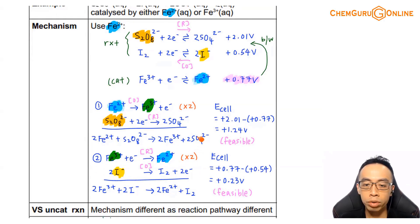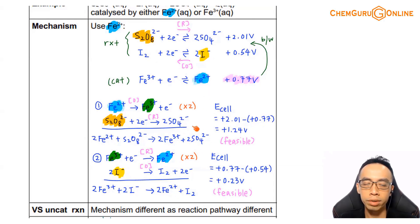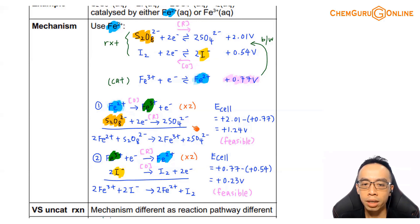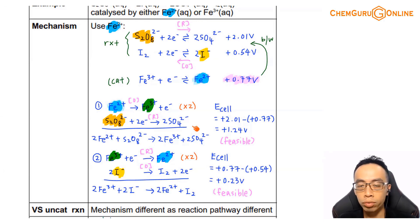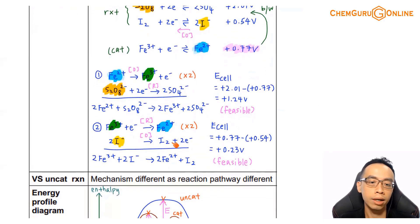We will encounter a few more examples when running through practice questions. Because homogeneous catalysis is very closely related to electrochemistry, we will find it more commonly examined compared to heterogeneous catalysis.